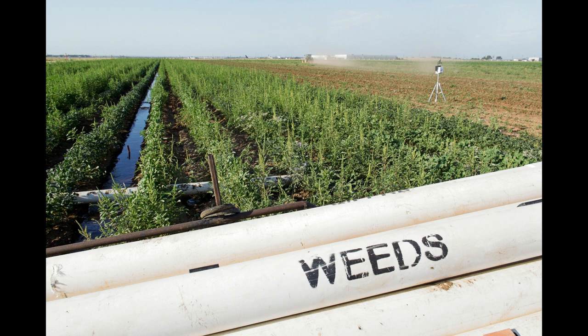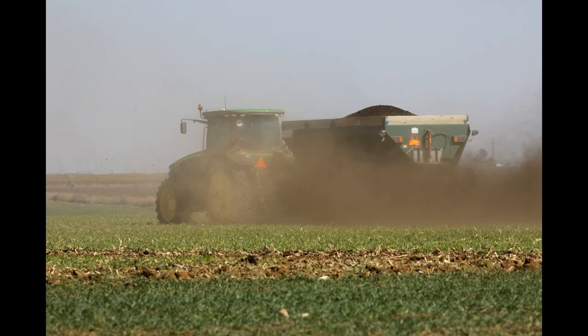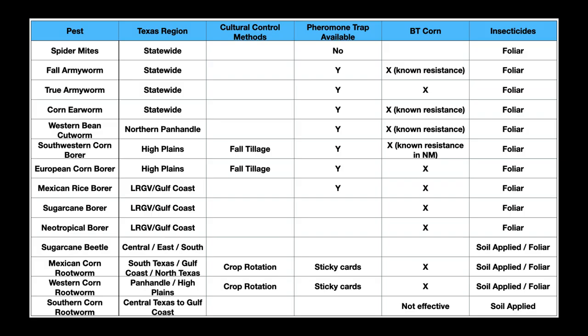On balance, having weedy fields and/or fields high in organic matter at planting will encourage higher pest populations. Most of our major pests, such as spider mites, the armyworms, and corn earworms, occur statewide, but a few of our pests are regional.